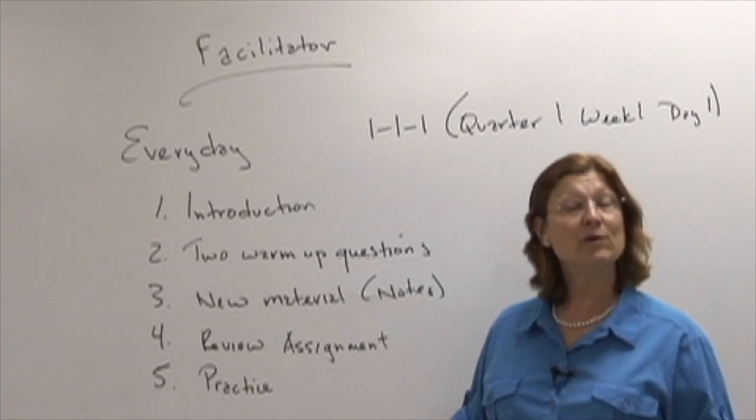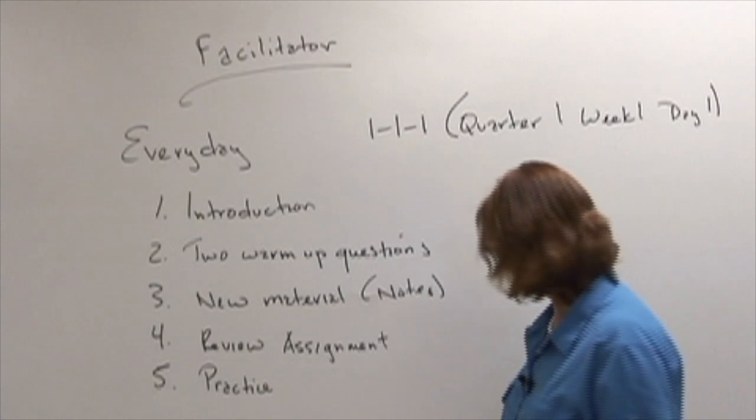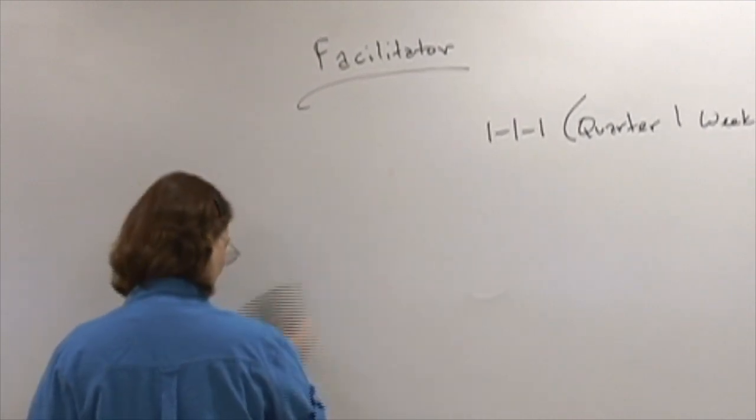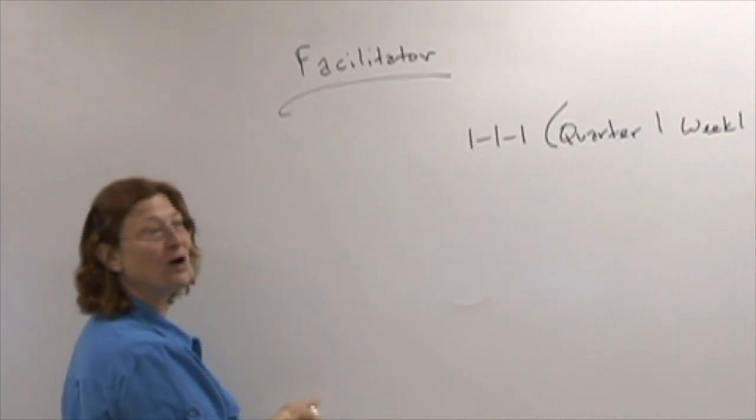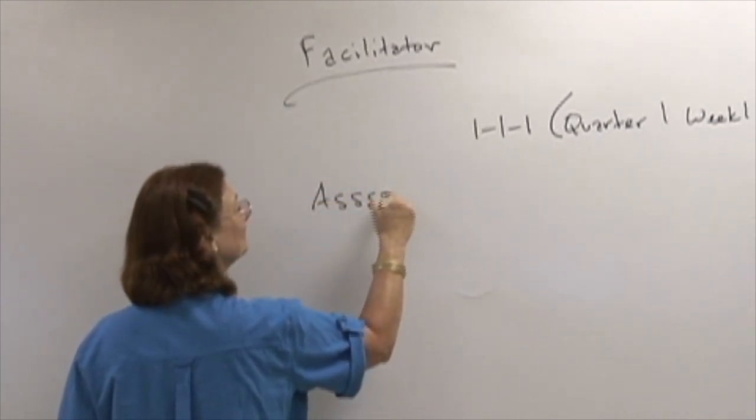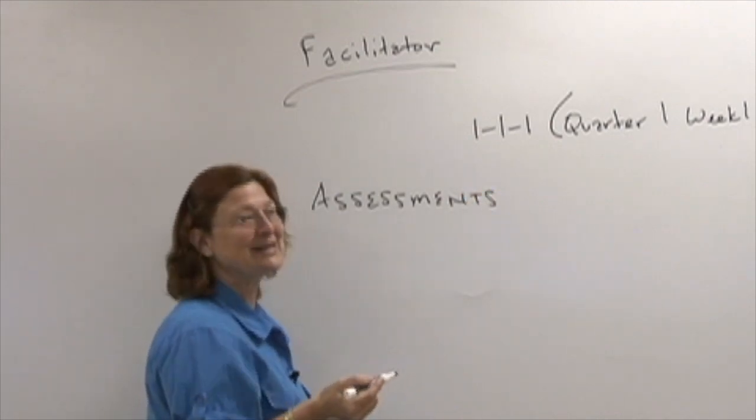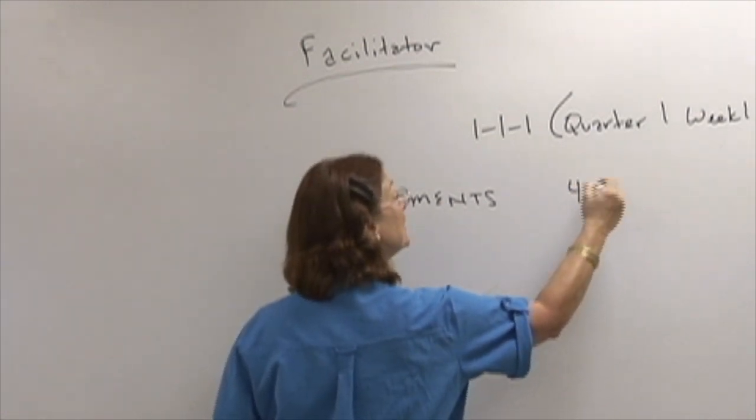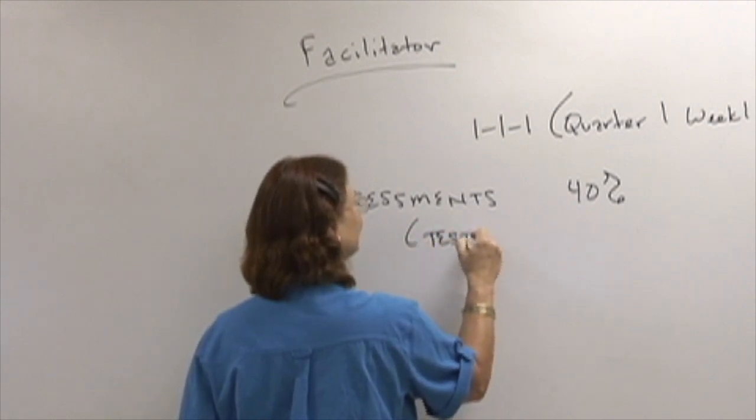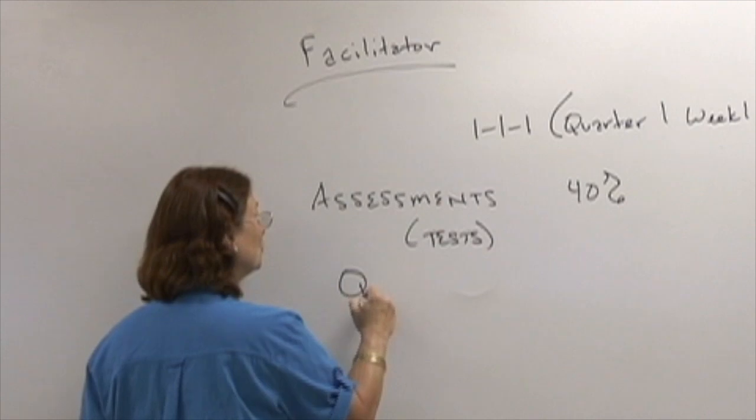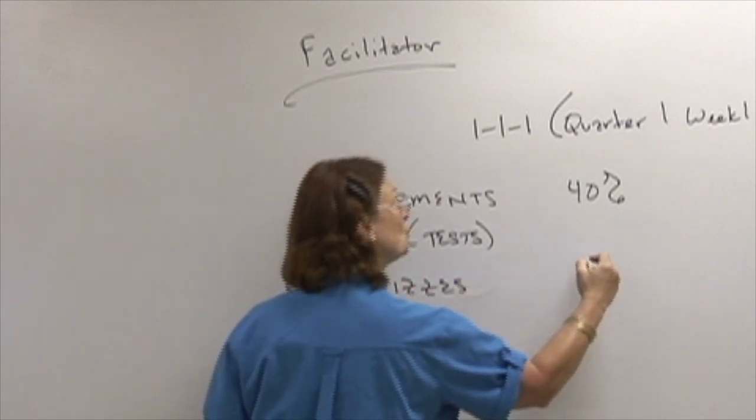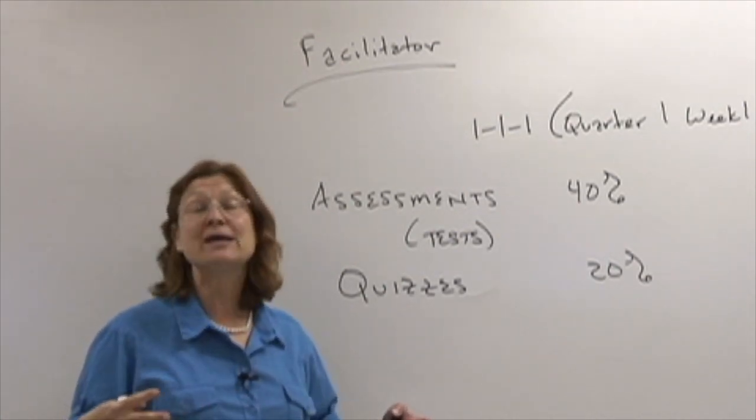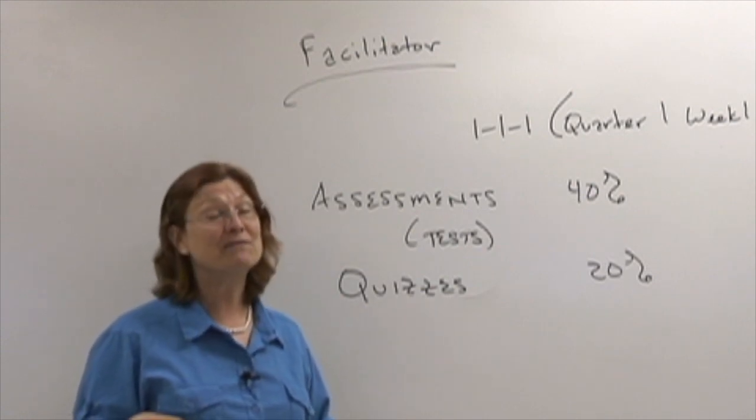Let's take a look at how we make the grade for the quarter. The quarter is composed of four different types of graded assignments. The first one, the big one, are the assessments. Assessments are the same thing as tests, but tests are just kind of scary so I like to call them assessments. That's 40%. Then we have quizzes, and quizzes are 20% of the quarter grade. Everything is graded on 100 points or 100%, which makes it very straightforward.